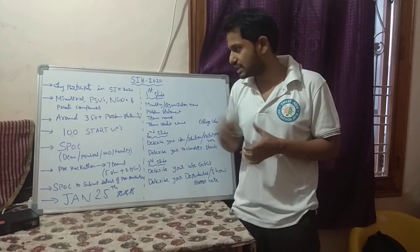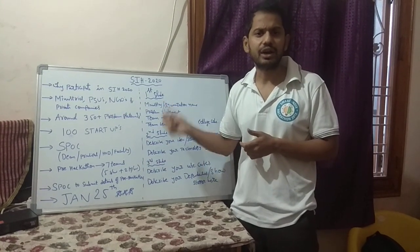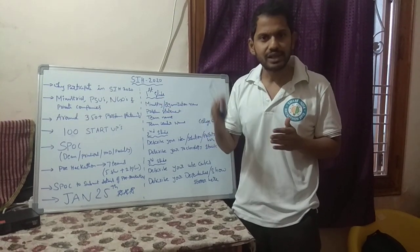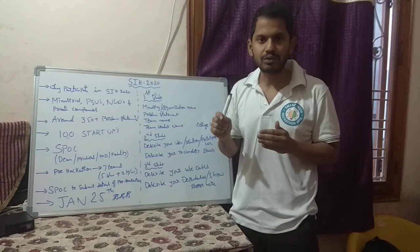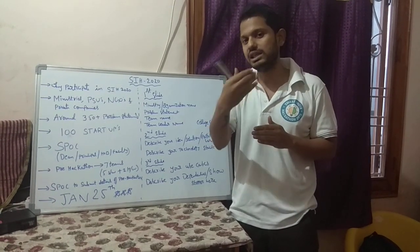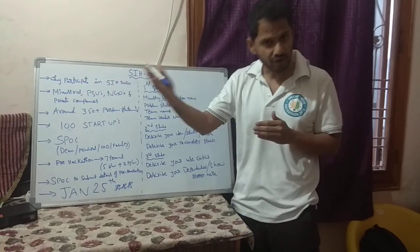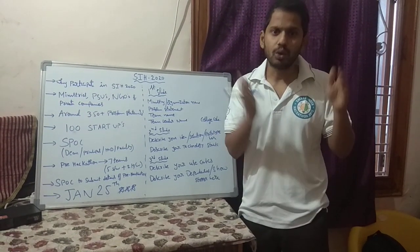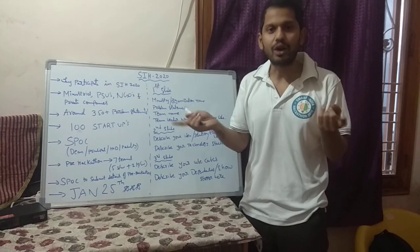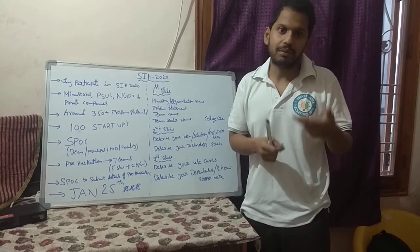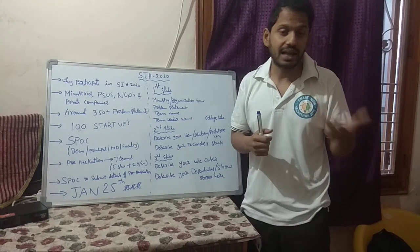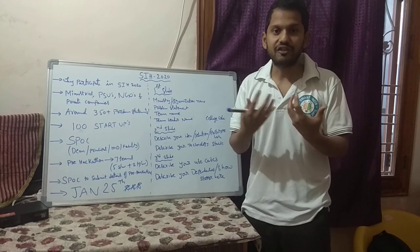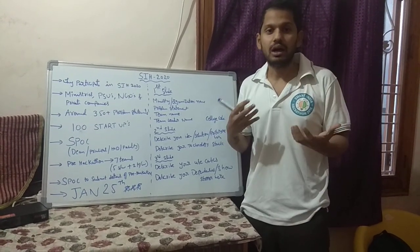In Smart India Hackathon 2020, there are already 350-plus problem statements available on the SIH website, divided into two categories: hardware and software. Computer science and IT people generally go for software, while electrical, electronics, mechanical, civil, and automobile people go for hardware. You can always combine — for example, two from electronics or mechanical and three or four from computer science and one from IT — to develop both software and hardware.